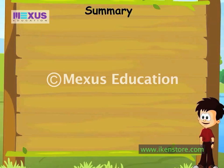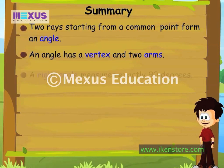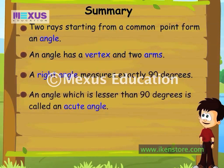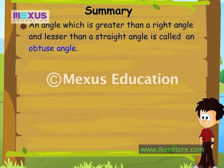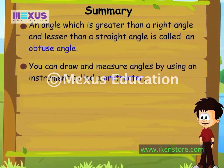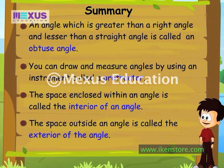My camping trip was a lot of fun, and while we were there, Dad taught me all about angles. Let me summarize: Two rays starting from a common point form an angle. An angle has a vertex and two arms. A right angle measures exactly 90 degrees. An angle less than 90 degrees is called an acute angle. An angle measuring exactly 180 degrees is called a straight angle. An angle greater than a right angle but less than a straight angle is called an obtuse angle. You can draw and measure angles using an instrument called a protractor. The space enclosed within an angle is the interior of an angle, and the space outside is the exterior of the angle.